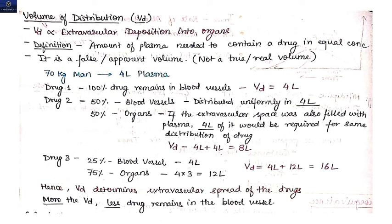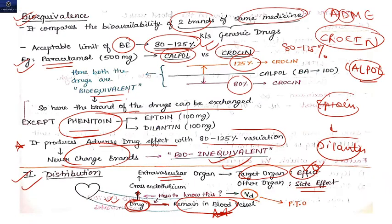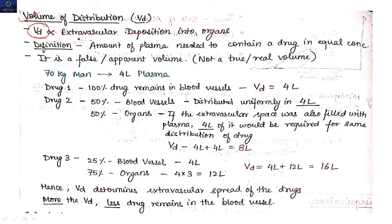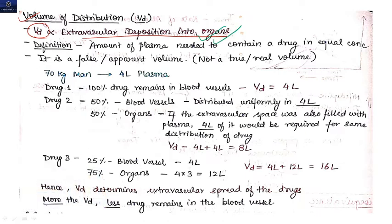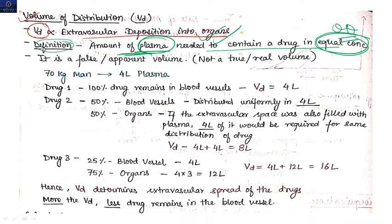Now let's discuss the volume of distribution (VD). VD tells us how much drug is crossing the endothelium and going to extravascular organs. Volume of distribution is directly proportional to extravascular deposition into organs. The definition of VD is: the amount of plasma needed to contain a drug at equal concentration. It is an apparent value.